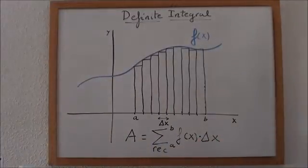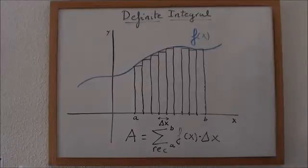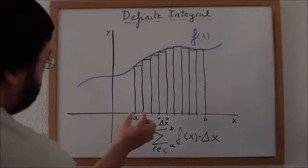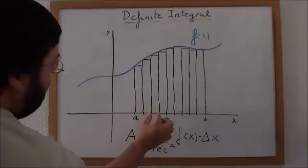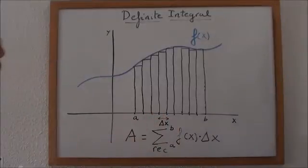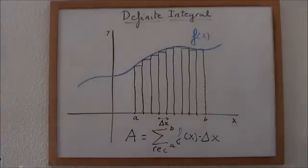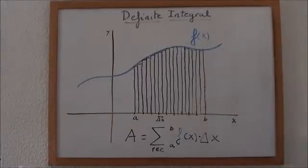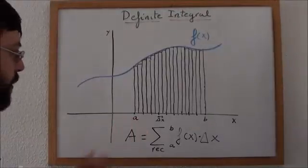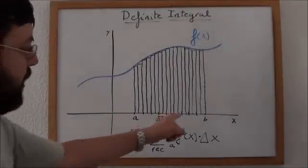So that would be an approximation of the area. If we make the rectangles narrower we will get a better approximation to the area. Now, increment of x is narrower so we have more rectangles.